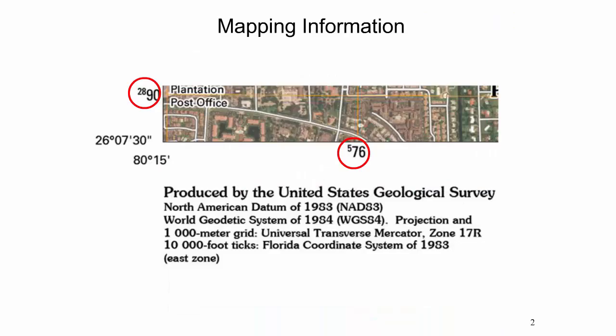All U.S. topo maps are cast to the North American Datum of 1983, also known as NAD 83, or to the World Geodetic System of 1984, also known as WGS 84. All maps are cast to the Universal Transverse Mercator Projection, also known as UTM, and overlaid with a 1000 meter UTM grid and coordinate labels. The Fort Lauderdale North Quadrangle, which is within UTM Zone 17, appears on a secant transverse Mercator Projection centered on 81 degrees west longitude.